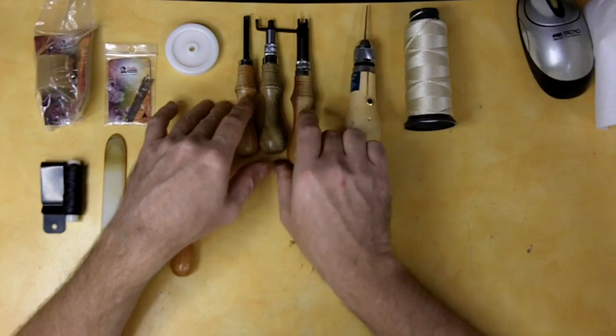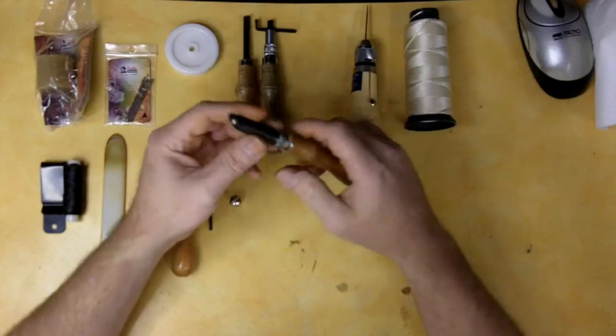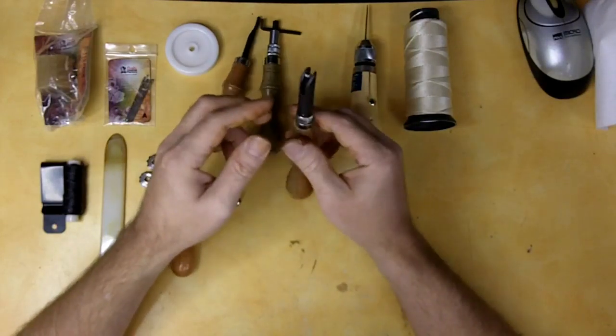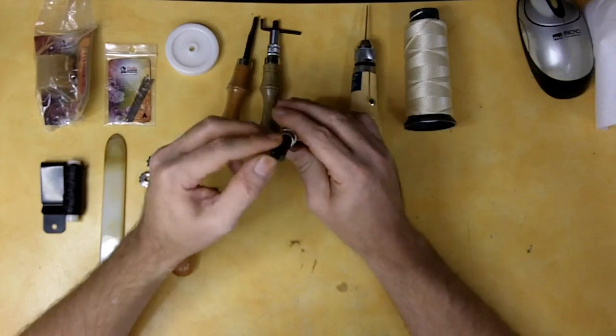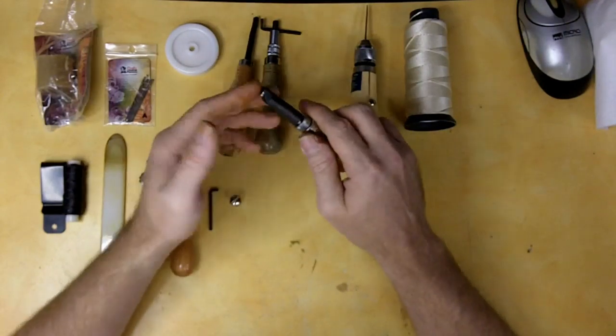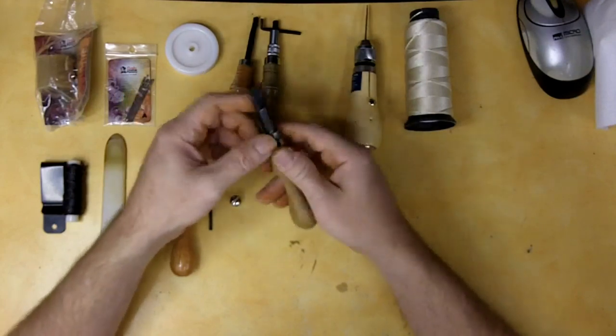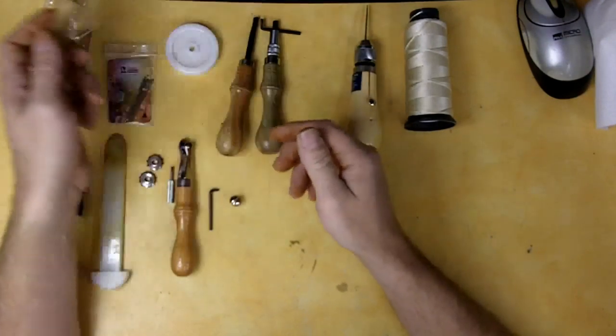I'm going to start with the worst one, which does not even work, which is supposedly this adjustable V-Gouge. Well, it's not a V, it's more like a U, and by the way it's ground, it simply does not work. But I don't intend on using this, so get rid of that.